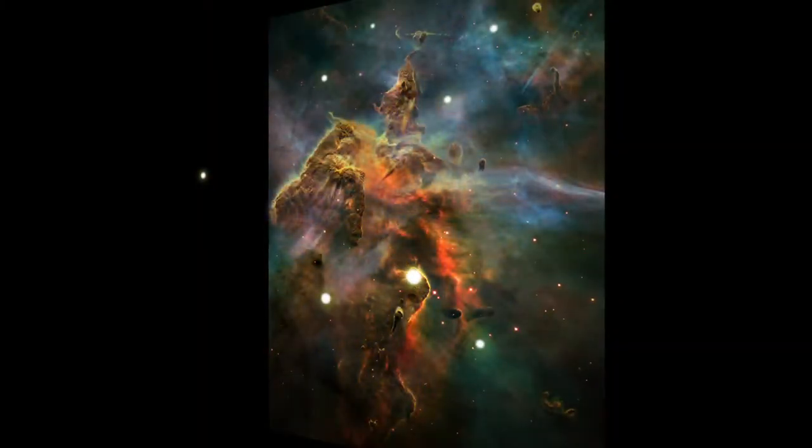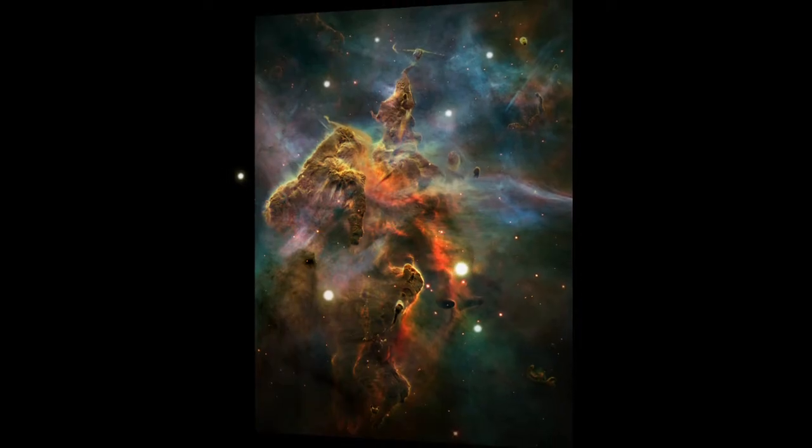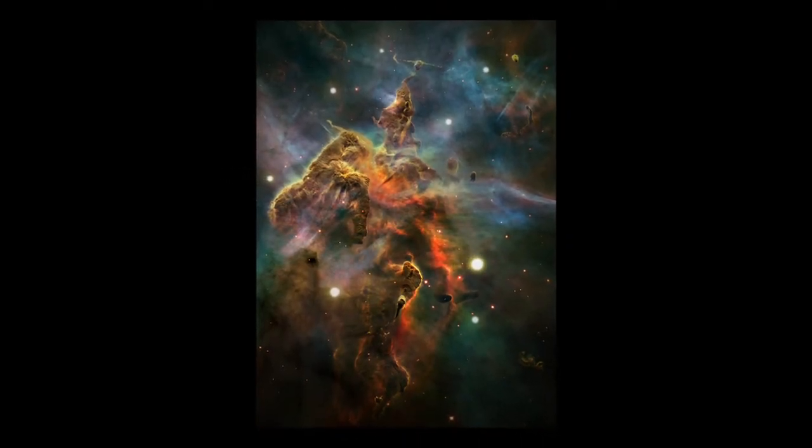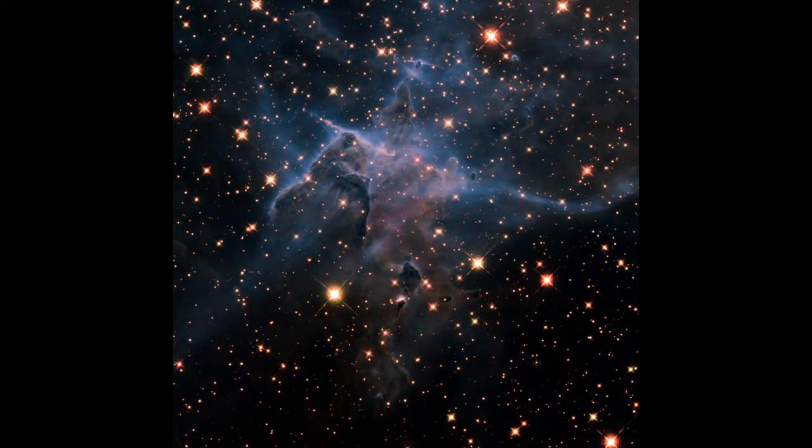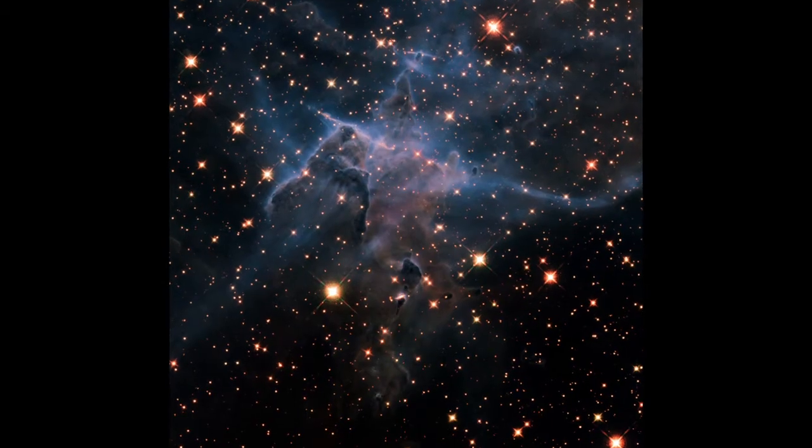The dust is so thick we can't see the infant stars inside, at least not with visible light. With infrared light, Hubble can see through all but the thickest dust. Yet it's in those dense knots that the youngest stars are forming.